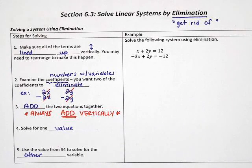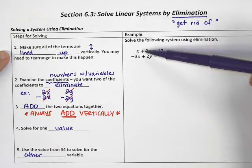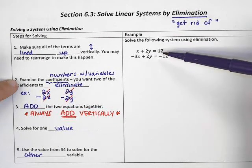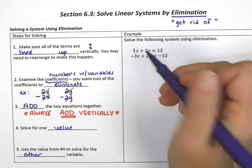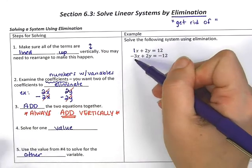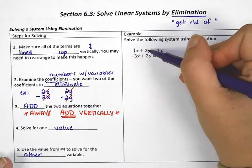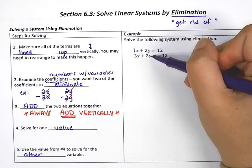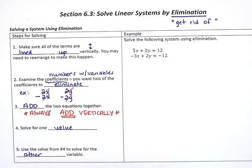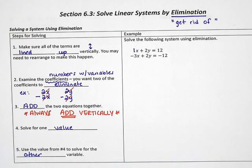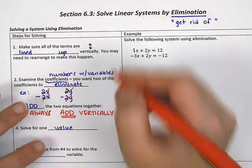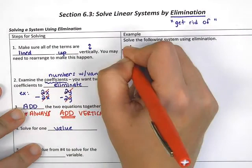Let's take a look at this example. The first thing is all of my terms are lined up — that part's already good. Now, look at the numbers. The invisible number by the x is a 1, and this x has a negative 3 — they're not going to cancel. The number by the top y is a 2 and the number by the bottom y is a 2 — they're not going to cancel, but they're close. If one of those 2's was a negative, we'd be good to go. So here's what you can do: we can choose to multiply this equation by a negative 1.